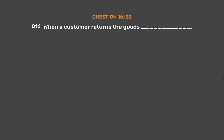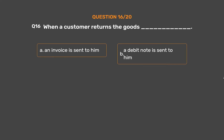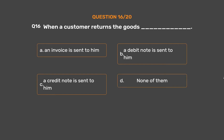Question number sixteen: when a customer returns the goods — Option A: an invoice is sent to him. Option B: a debit note is sent to him. Option C: a credit note is sent to him. Option D: none of them.